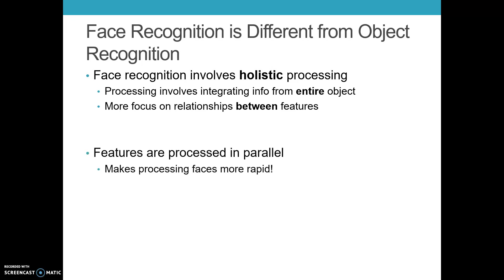These features are generally processed in parallel, which makes face processing much more rapid. What evidence do we have that faces are holistically processed? We have a couple of historical pieces of research. Take a look at these two images — upside down, they don't look all that weird until they're flipped.